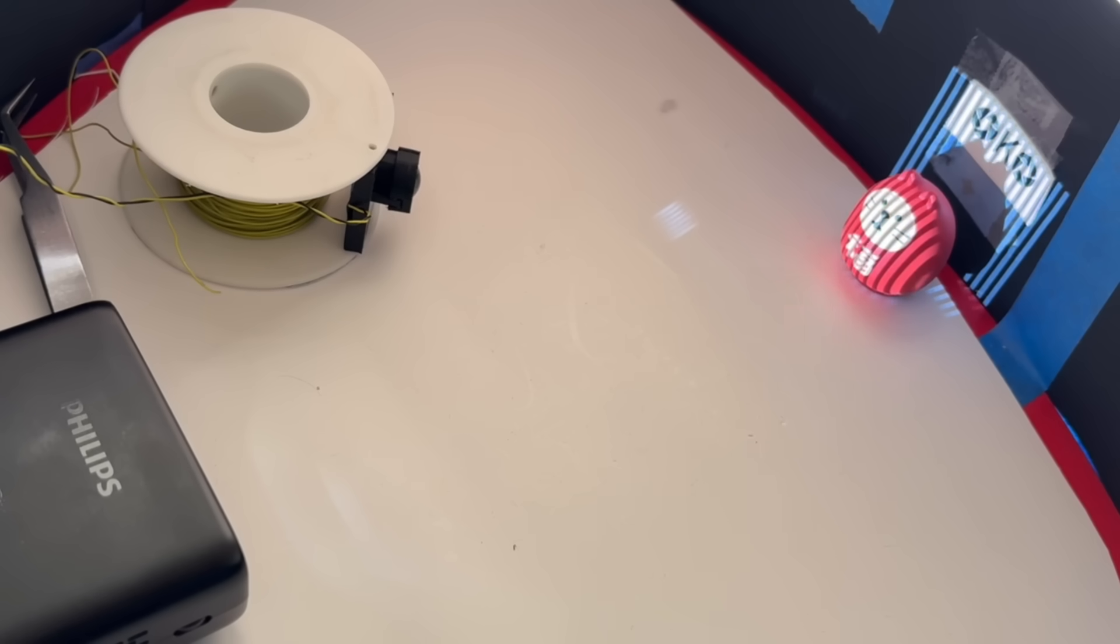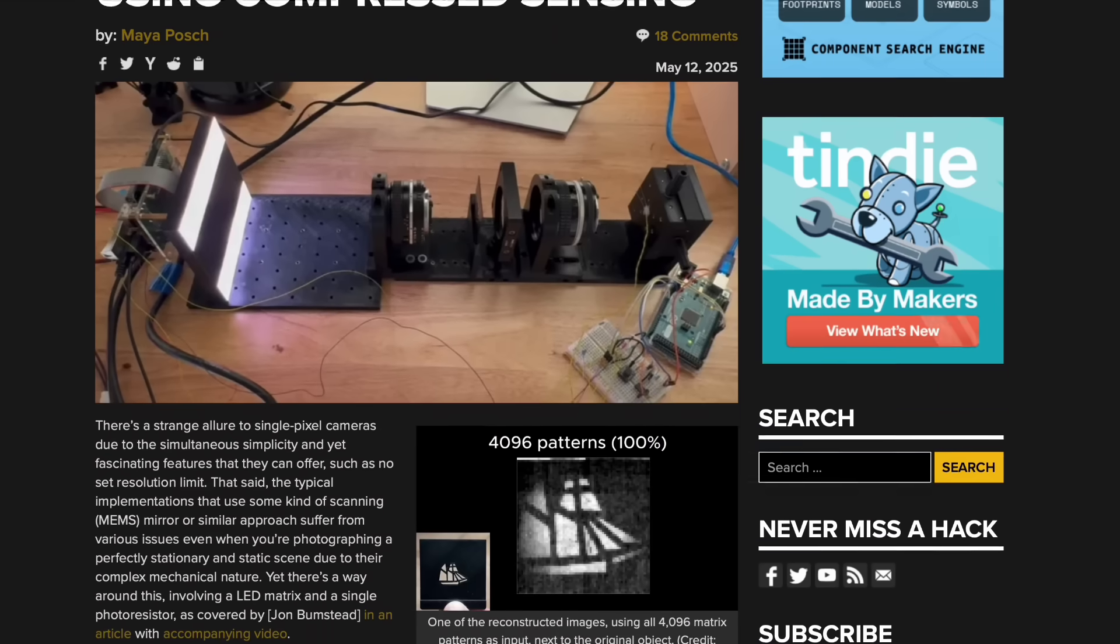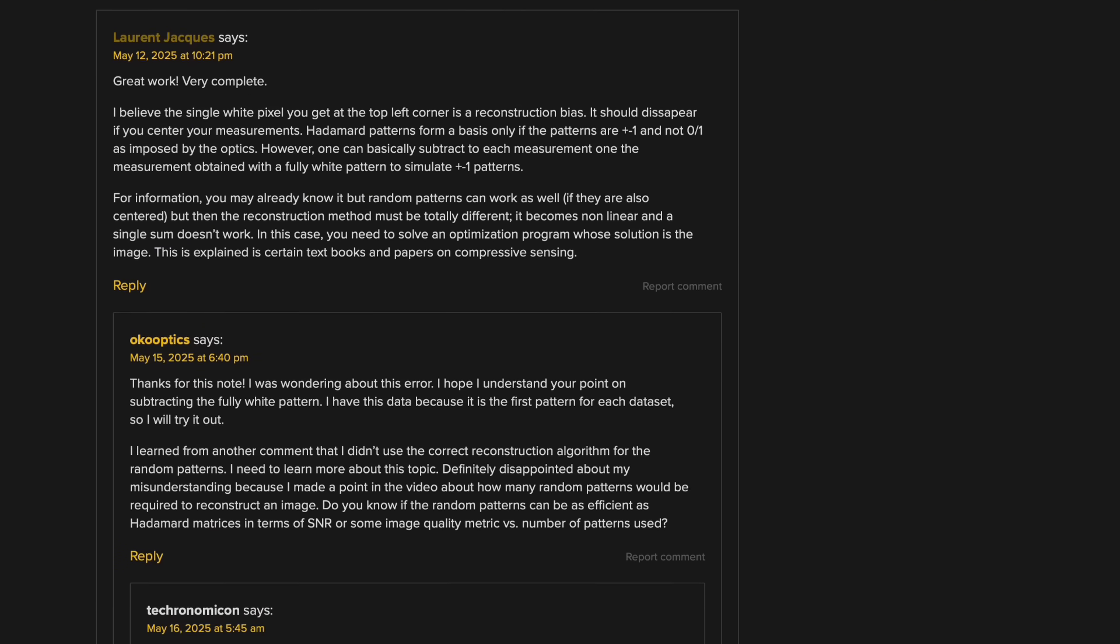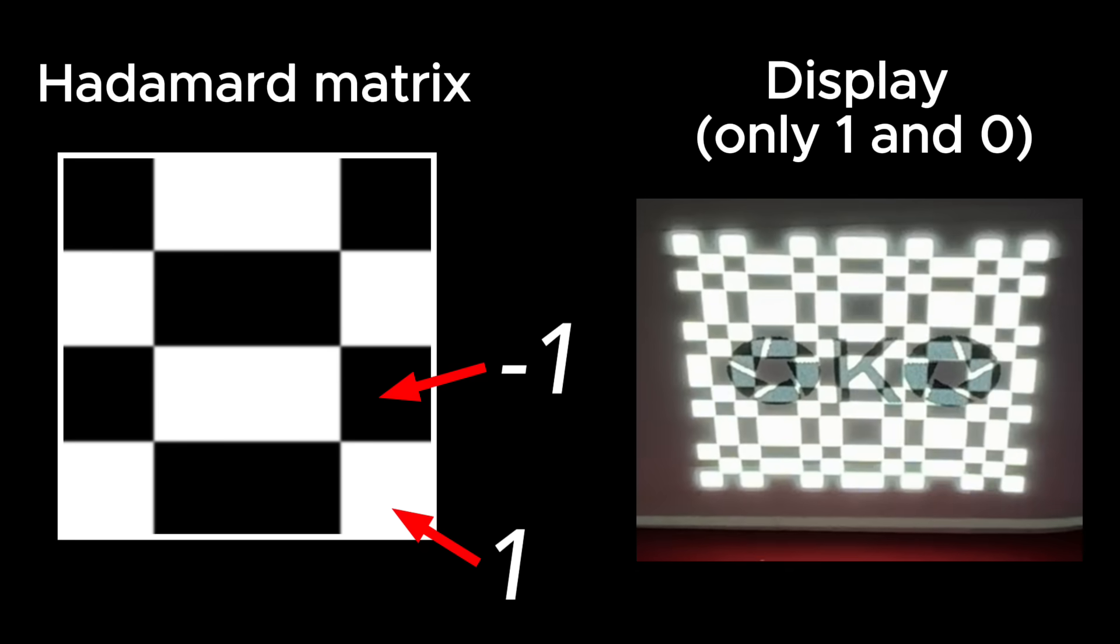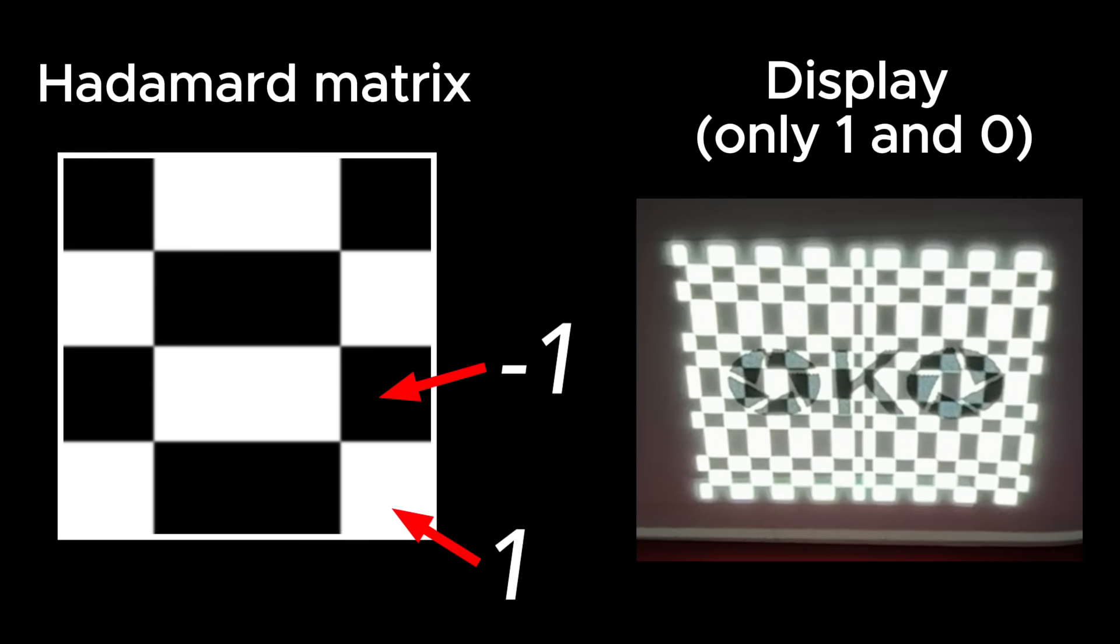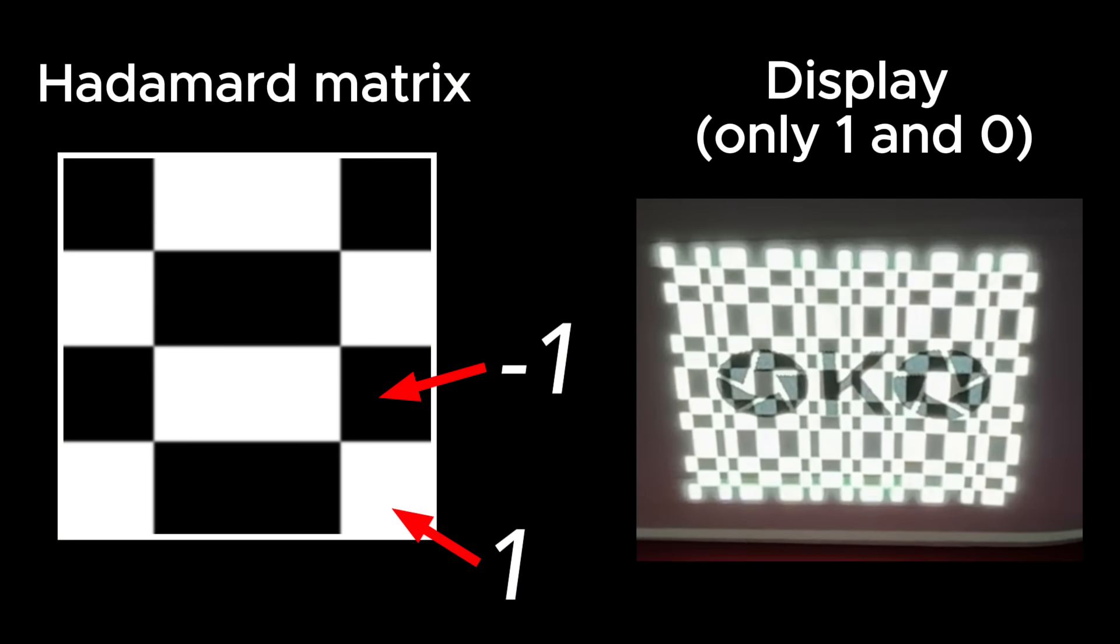I also want to try the same scene using the Hadamard patterns like I did in the last video. There were a couple useful comments from that previous video that led me to read more carefully about using these patterns. Hadamard matrices consist of 1s and negative 1s, not 1s and 0s like the binary images I was projecting onto the object. To overcome this problem, you need to illuminate with the inverted Hadamard pattern and subtract the two measurements.